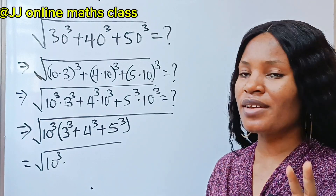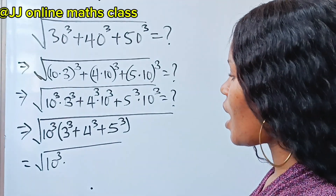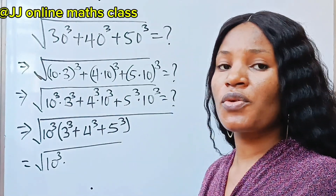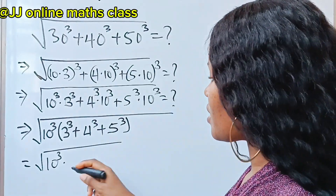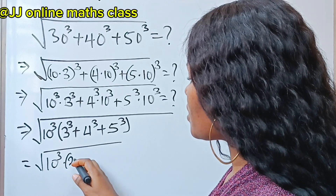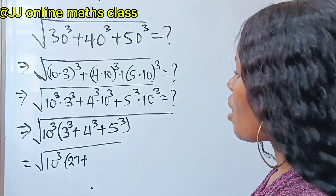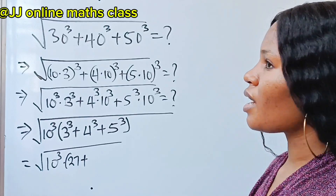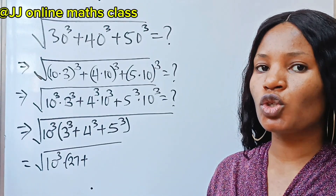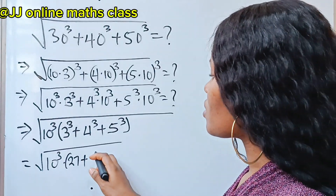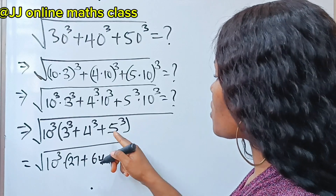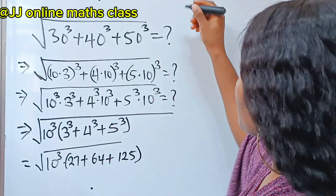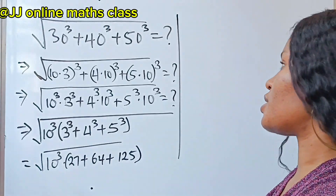What is 3 to the power of 3? That is 3 times 3 times 3, which is 27. So we have 27 plus — what is 4 to the power of 3? 4 times 4 is 16, 16 times 4 is 64. So we have 64 plus 5 to the power of 3, which is 125.